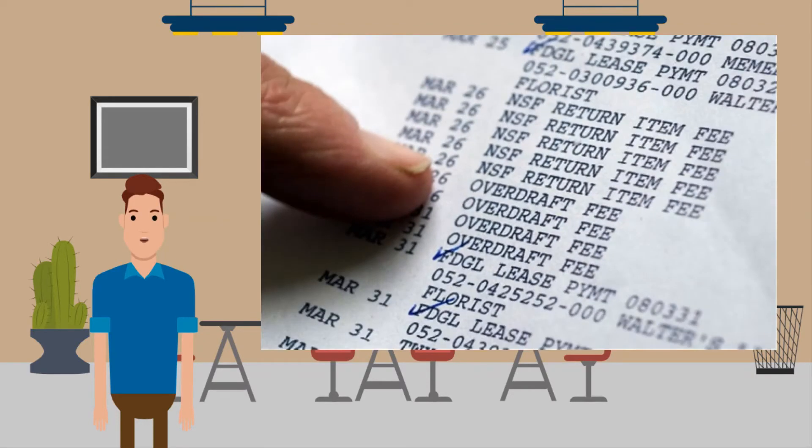Next, short-term or current liabilities - these need to be repaid within a year, but often in a much shorter period of time. Examples are trade payables to suppliers and overdrafts.